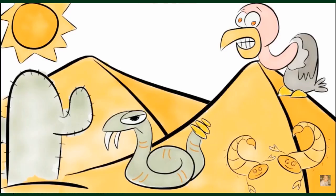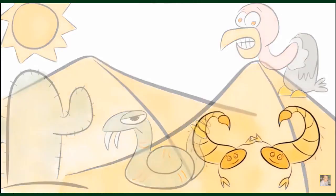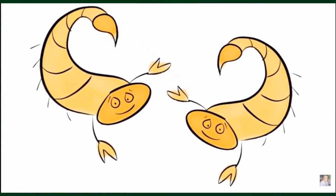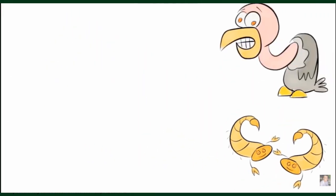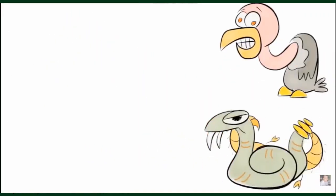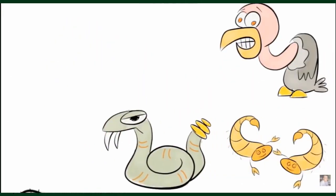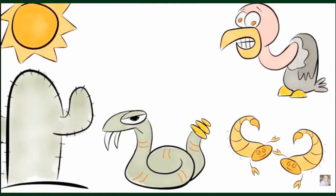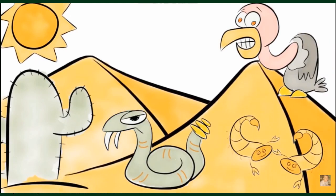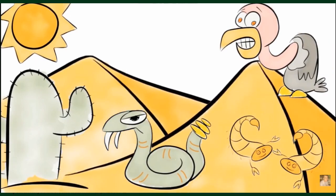Another ecosystem is the desert. A group of scorpions is a desert population. All of the scorpions, birds, reptiles, and other living things are the desert community. Add in abiotic factors to complete the desert ecosystem.